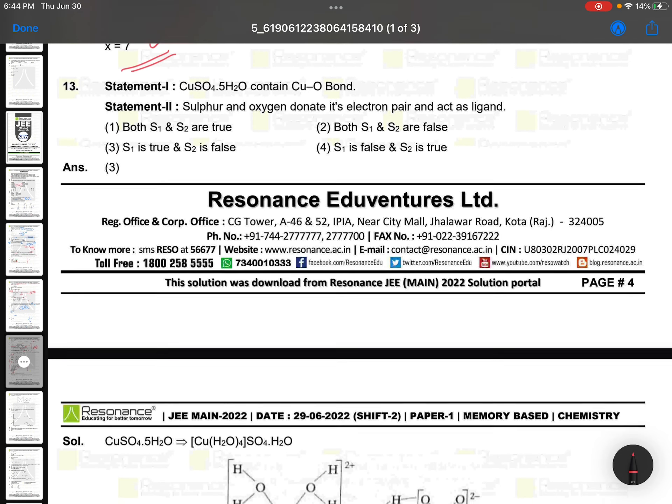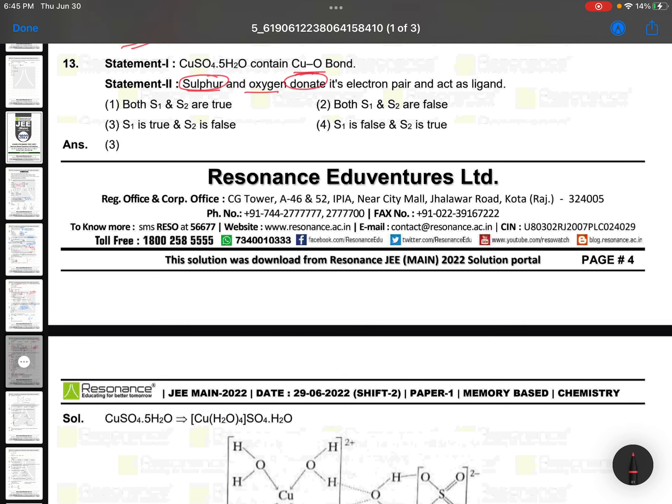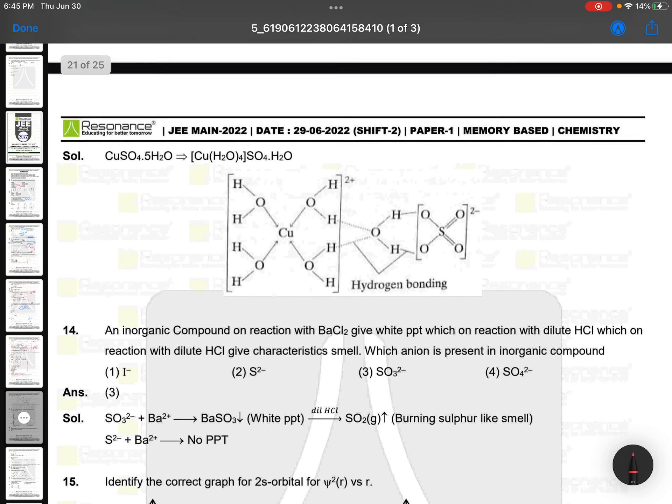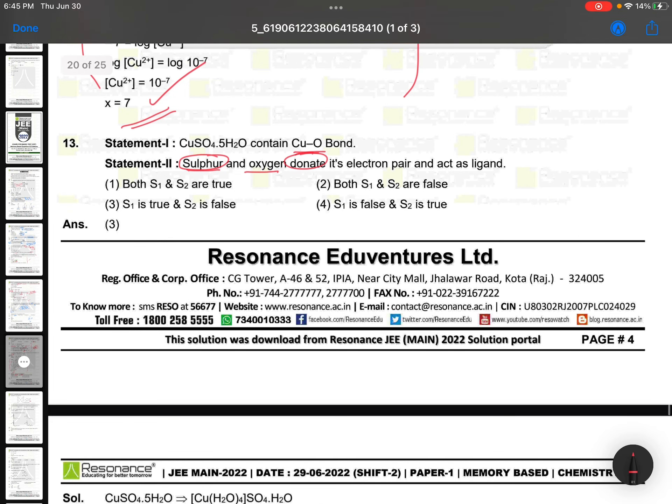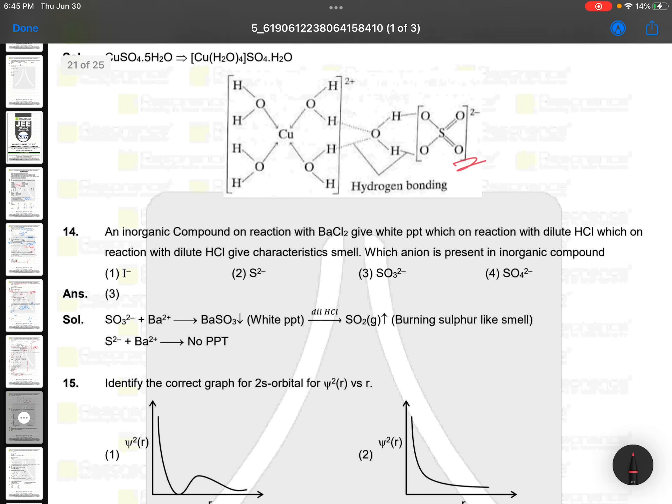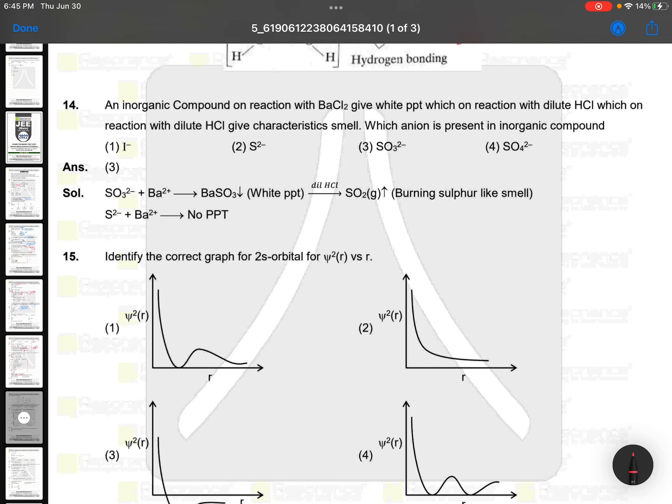Copper sulfate 5H2O contains CuO1. True. Sulfur and oxygen donate? Sulfur cannot donate, sulfur is just an anion. So S1 is true, S2 is false. An inorganic compound reacts with BaCl2 to give white precipitate and reacts with dilute HCl to give characteristic smell. Which anion is present? That is sulfate anion. Because sulfate anion with barium gives barium sulfate, which with dilute HCl releases SO2.